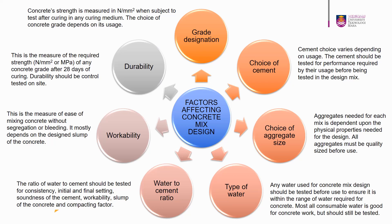Number 5: Water-to-Cement Ratio — the ratio of water to cement should be tested for consistency, initial and final setting, soundness of the cement, workability, slump of the concrete, and compacting factor. Number 6: Workability — this is the measure of ease of mixing concrete without segregation or bleeding, and it mostly depends on the design slump of the concrete. Number 7: Durability — this is the measure of the required strength in newton per millimetre square of any concrete grade after 28 days of curing. Durability should be control-tested on site.